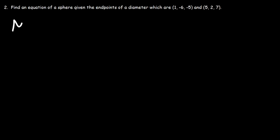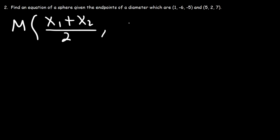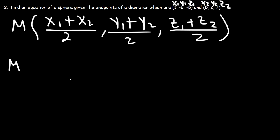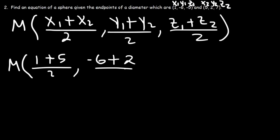First, let's use the midpoint formula for a three-dimensional system. We're going to average the x values of the two points, then take the average of the y values and the average of the z values. You can call this x1, y1, z1, and this is going to be x2, y2, and z2. x1 is 1, x2 is 5, y1 is negative 6, y2 is 2, z1 is negative 5, z2 is 7.